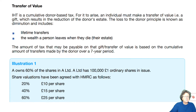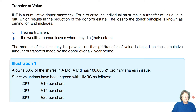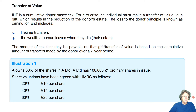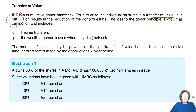A transfer of value: IHT is what's known as a cumulative donor-based tax. So it's what the giver is giving, and it's based on a continuous amount as it accumulates and gets larger. An individual must make this transfer of value — i.e. they must make a gift — which results in the reduction of that person's estate in value.